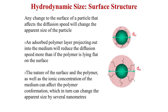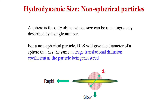Surface structures also affect hydrodynamic size. An adsorbed polymer layer projecting out into the medium will reduce diffusion speed more than if the polymer is lying flat. Any change on the surface that affects the diffusion speed of the particle will give a different hydrodynamic size. The nature of the surface and the polymer, as well as the ionic concentration, can affect polymer conformation, which in turn can change the apparent size by several nanometers. For non-spherical particles, if the particle is close to a sphere, diameter can be stated directly; but a flat particle moves differently in different directions, so the average diffusion coefficient equivalent sphere is used to determine its hydrodynamic diameter.